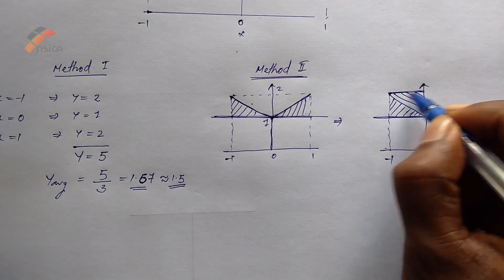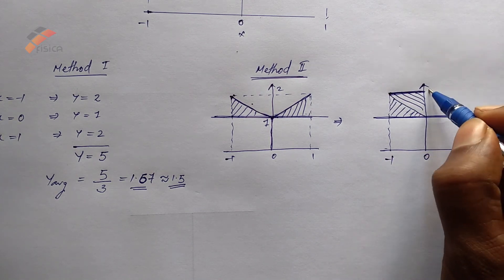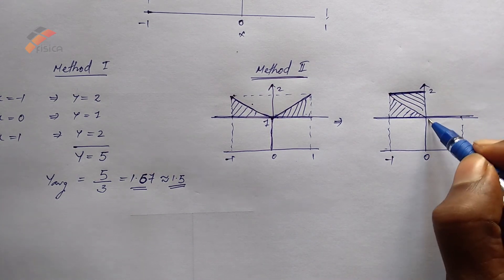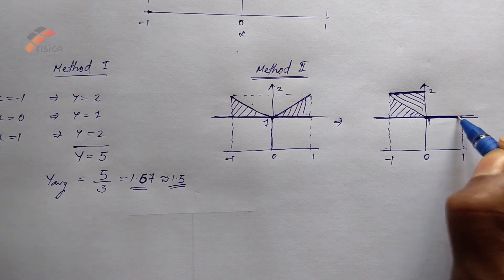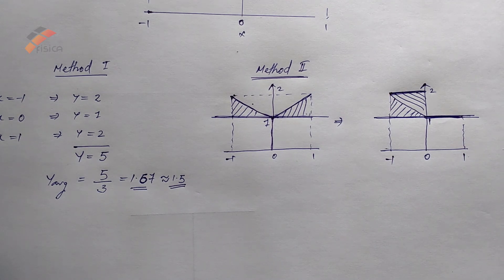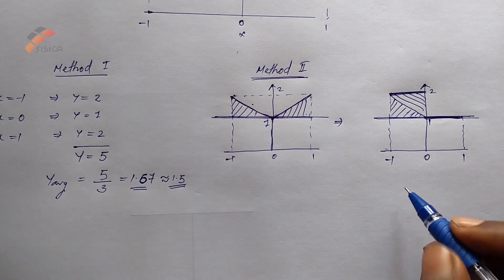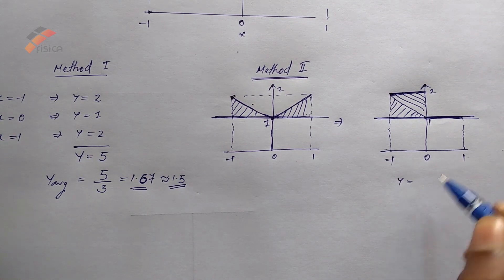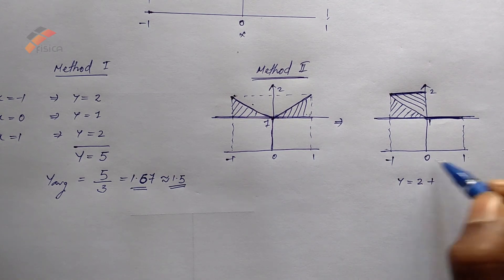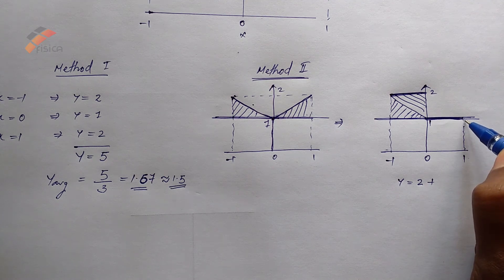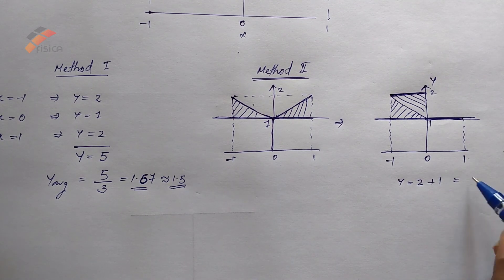Now, the average value of y is, from minus 1 to 0, this is the y value. So, the y value from minus 1 to 0 is 2, plus 0 to 1 is 1. That is, total y value is 3.